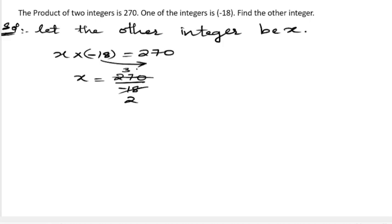So x equals 30 by minus 2. Two 15s are 30. So x equals minus 15.